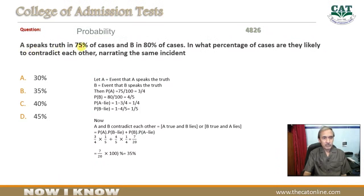A speaks truth in 75% of cases and B in 80% of cases. In what percentage of cases are they likely to contradict each other narrating the same incident? A 75% cases mein sach bolta hai aur B 80% cases mein. Aur humne batana hai ki percentage of cases jab woh ek dusre se contradict karein, bhayanin ke ek sach bol raha aur ek jhoot bol raha.